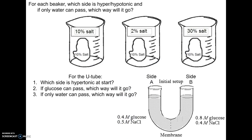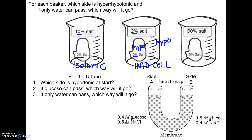Practice problems: Problem one — cell and solution both have the same amount of sugar, so neither side is hypertonic; this is an isotonic situation. Problem two — 10% salt inside the cell, 2% outside: the cell is hypertonic, the outside solution is hypotonic. Water will go toward the hypertonic side, so water goes into the cell. If salt could also pass, it would go out — from where there's more to where there's less.